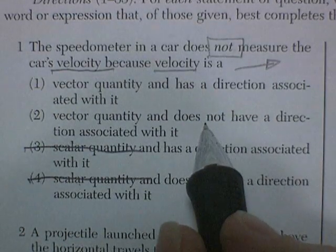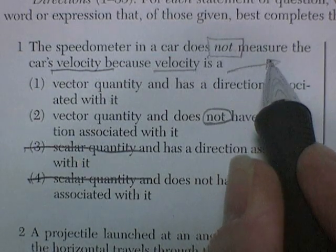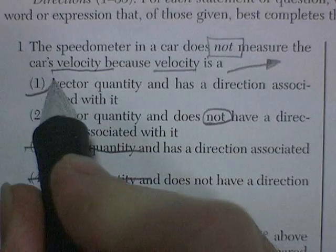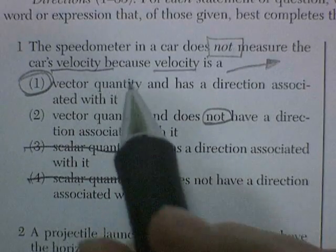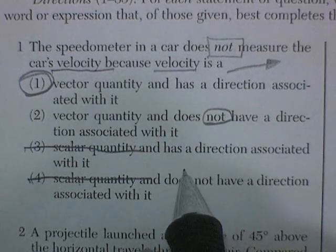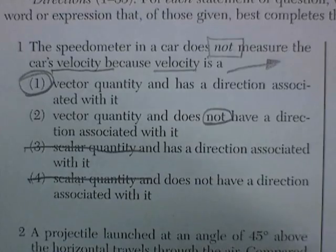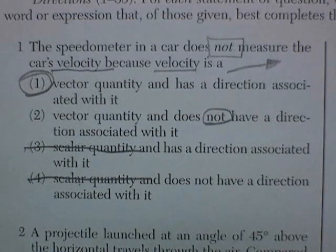So it's a vector and it has direction associated with it, or vector and it does not have direction. Well, velocity is a vector, which means it does have direction. Speed is a scalar, and it simply tells you how fast you're going, but it doesn't indicate your direction. And when you're driving in a car, that little number on the dial only tells you the speed, not the direction. You've got to look out the window to find that.